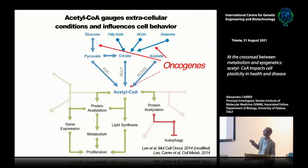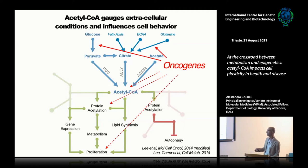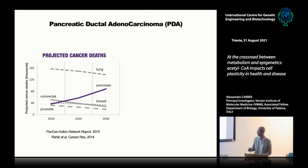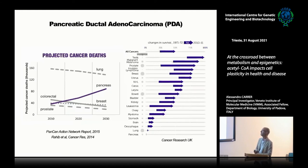We worked quite a bit on this during my time in Philadelphia, particularly taking a deep look at the role of AKT in cell metabolism. But today I want to focus on my work on pancreatic cancer. Pancreatic cancer is a deadly disease projected to become the second leading cause of cancer-related death by 2030. The reason is summarized in a graph where common cancers are listed by five-year overall survival.